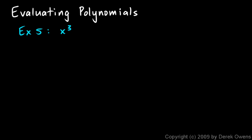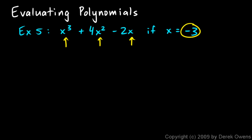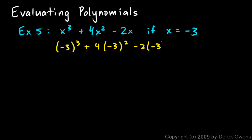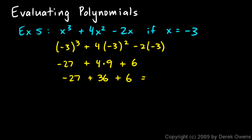Example 5: x cubed plus 4x squared minus 2x minus 3, if x equals negative 3. We rewrite this and x shows up in 3 places, so in all 3 places we put in negative 3: negative 3 cubed plus 4 times negative 3 squared minus 2 times negative 3 minus 3. Negative 3 cubed is negative 27. Negative 3 squared is 9, so 4 times 9 is 36. Negative 2 times negative 3 is positive 6. So negative 27 plus 36 plus 6 minus 3 works out to 15.